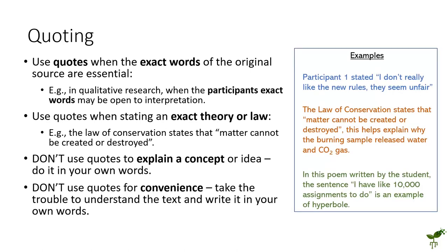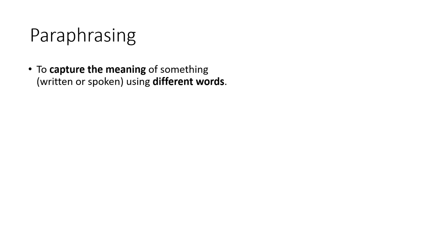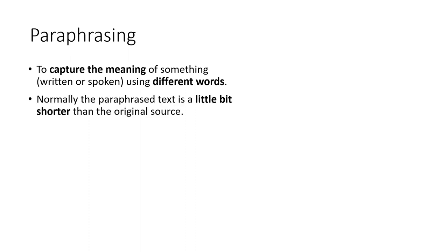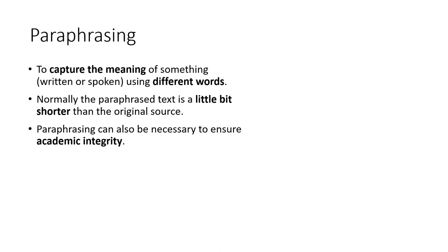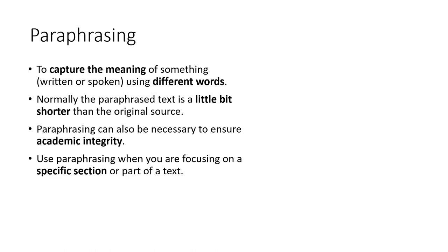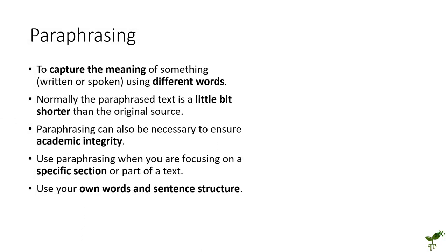Given on the right are some examples of quotes in action. Paraphrasing is often done to capture the meaning of something but using different words or sentence structures. This normally ends up with the text a little bit shorter than the original, but the important part is that the meaning more or less remains the same. Paraphrasing can be quite necessary in some cases to avoid academic integrity or plagiarism issues, but the key thing is to use paraphrasing when you're focusing on a section of a text and required to write it in your own words. Use your own words and, importantly, your own sentence structure as well — simply changing a few words here and there may not cut it, as it may still be too similar to the original.